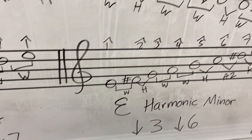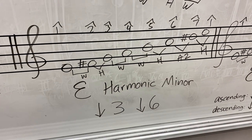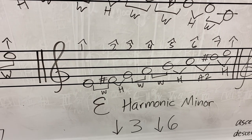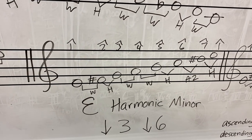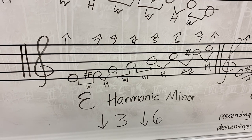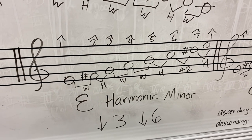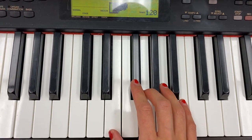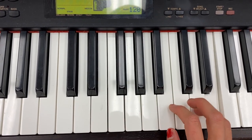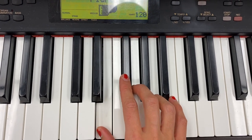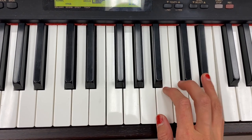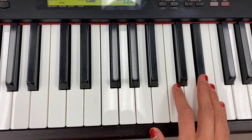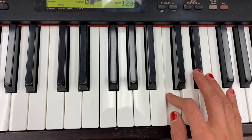The next scale is E harmonic minor. It's the same pattern except we're not going to be lowering the seventh degree. So you have the augmented second between scale degrees 6 and 7. Here is E natural minor, and then this is E harmonic minor — I'm lowering the sixth degree but not the seventh degree, which creates that augmented second — that C to D-sharp.